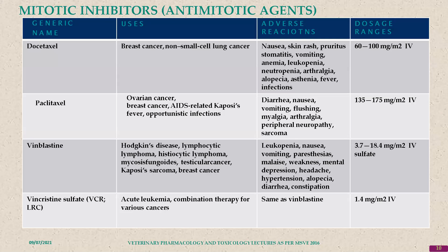Vinblastine and vincristine are derived from the Vinca rosea plant and are now commonly synthesized. Docetaxel and paclitaxel are commonly used in ovarian cancer and breast cancer, as well as AIDS-induced Kaposi's sarcoma. Vinblastine is indicated for Hodgkin's disease, lymphocytic lymphoma, and histiocytic lymphoma. Vincristine is used in transmissible venereal tumors in dogs and acute leukemia combination therapy.